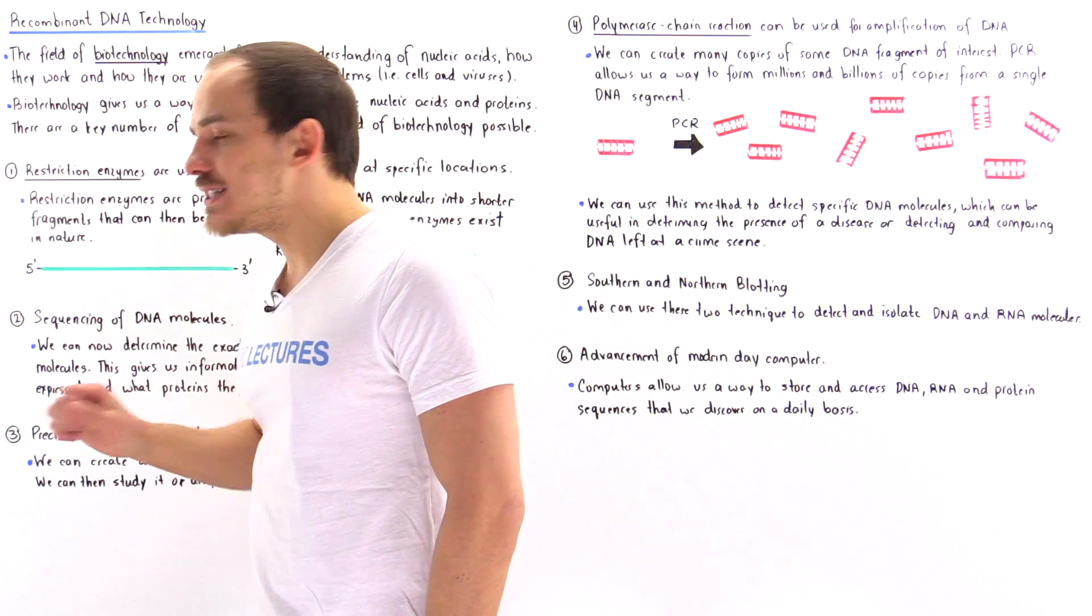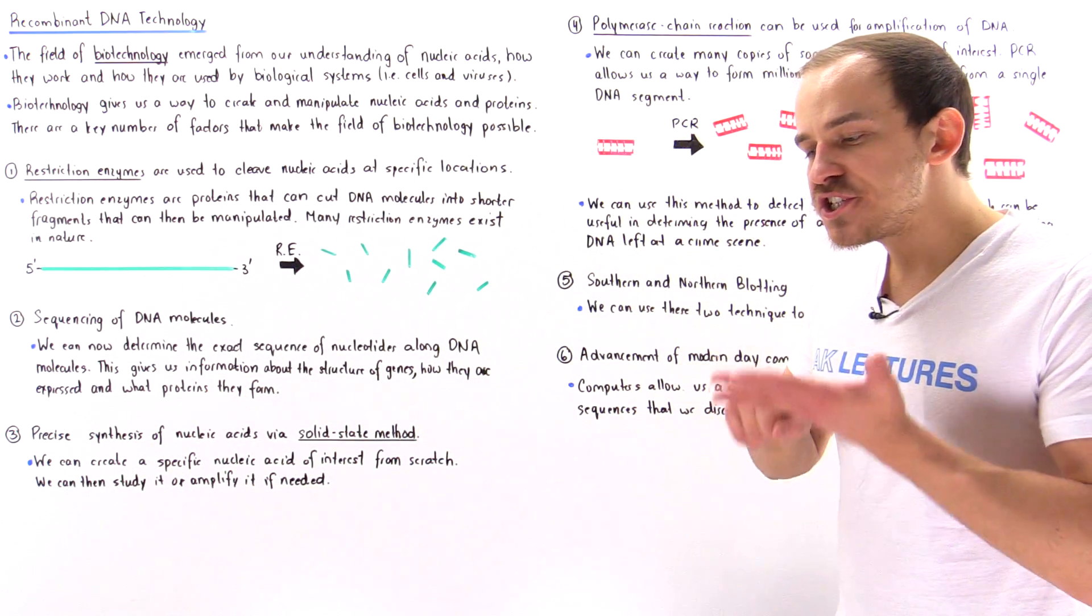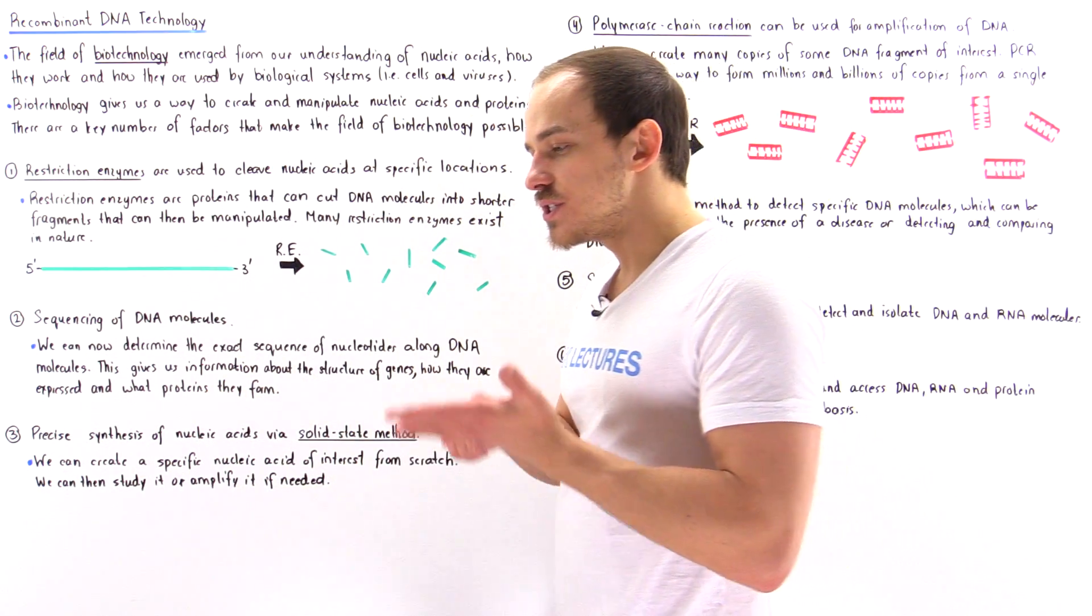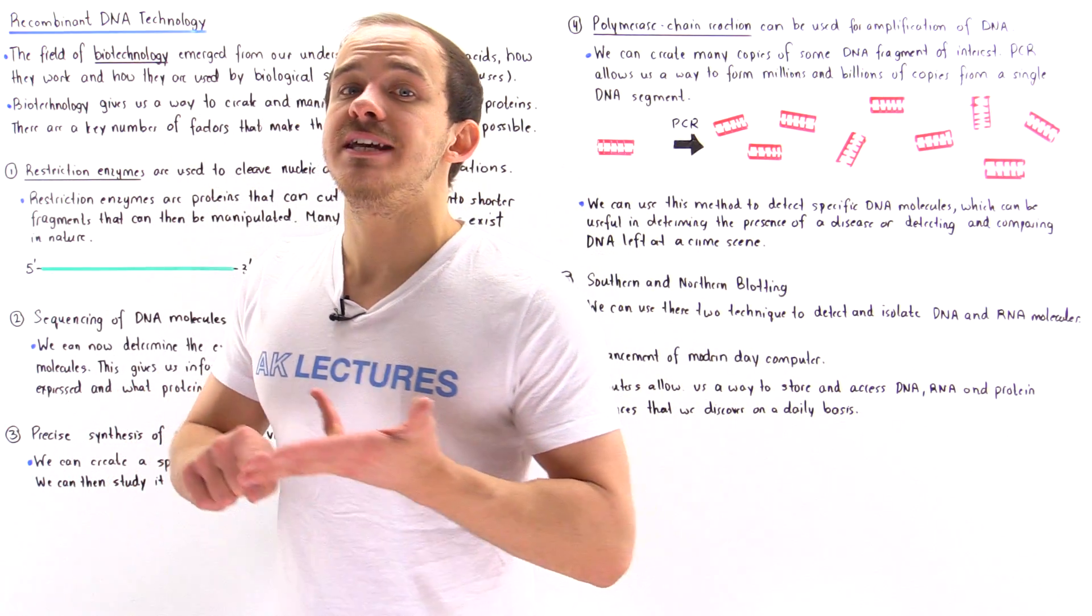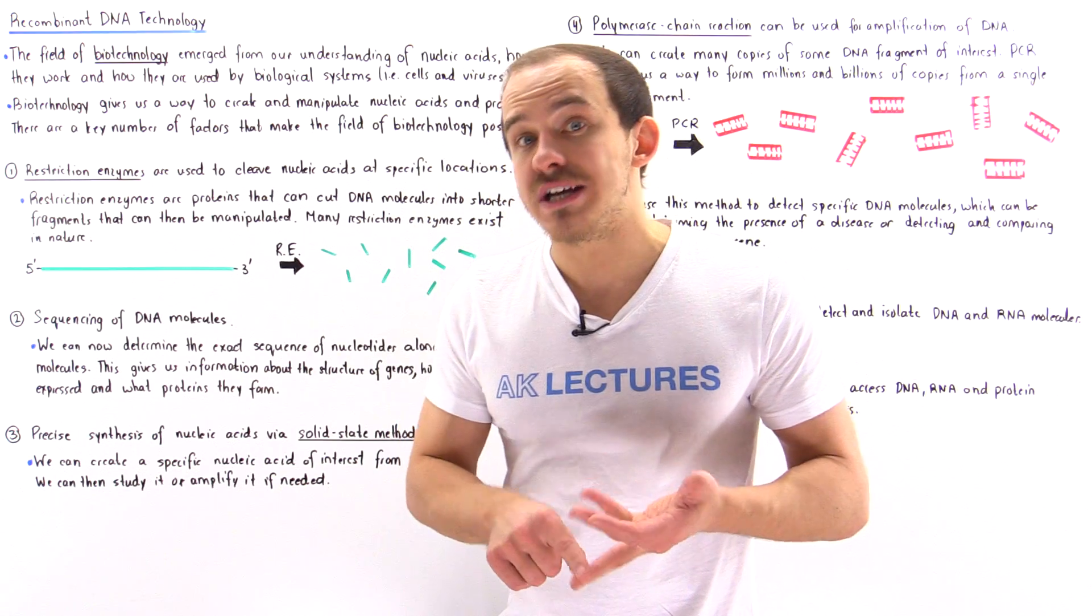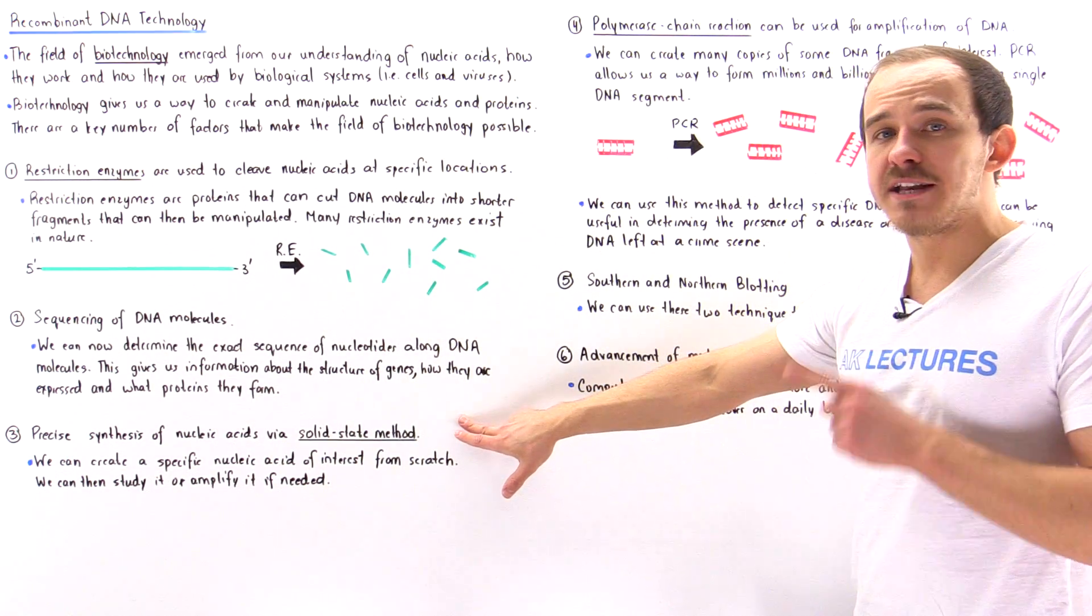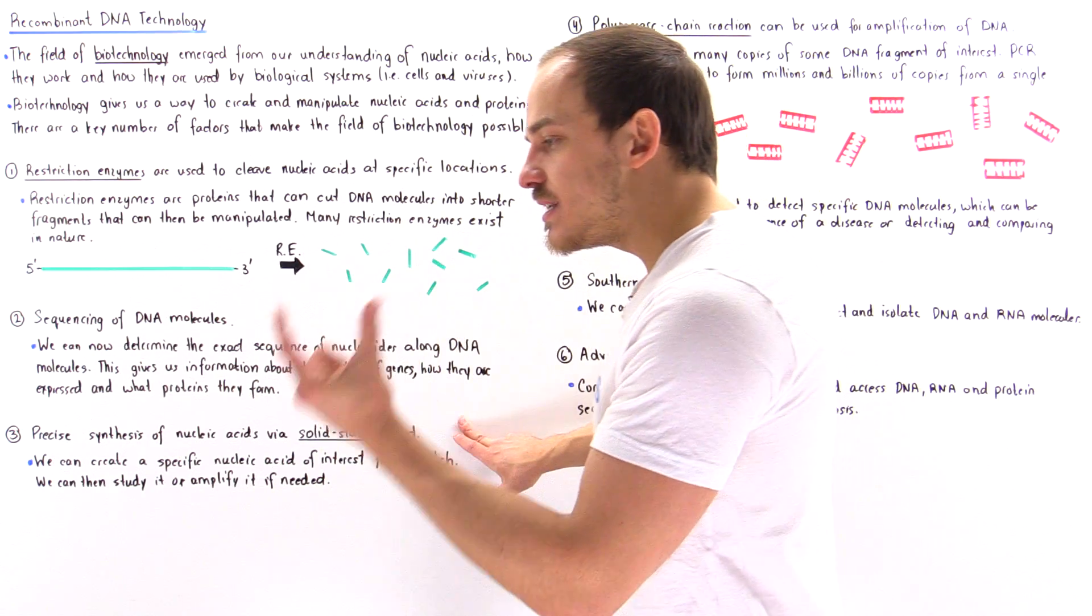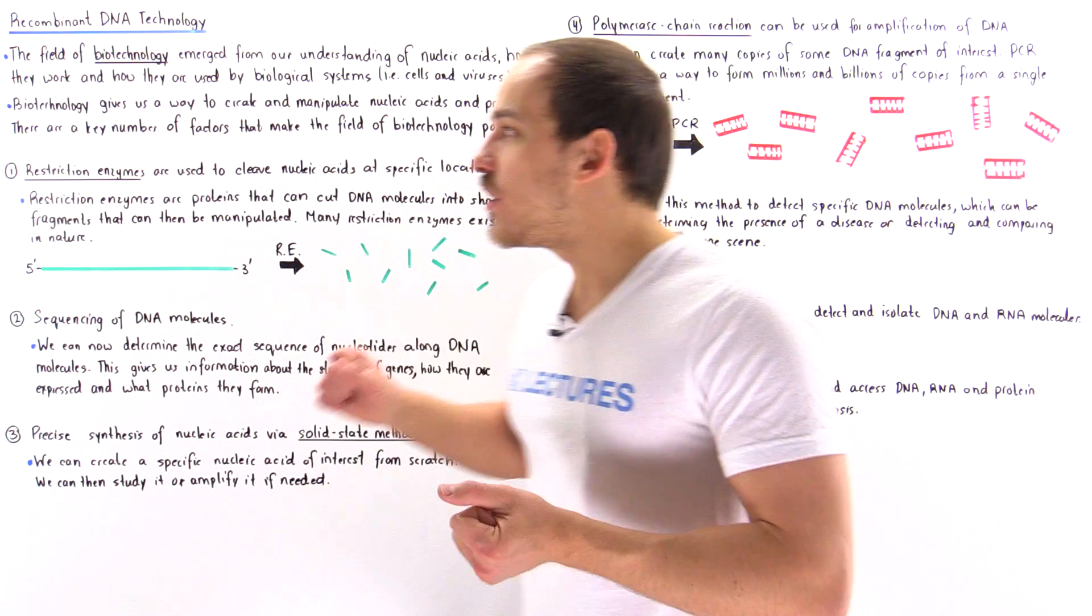Now this also leads us into factor number three. So now that we know what the specific nucleotide sequence of that DNA molecule is, we can now synthesize that DNA molecule from scratch in the laboratory by using a method known as solid state method. Now, once we synthesize that DNA molecule of interest, what do we do next?